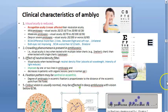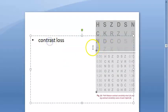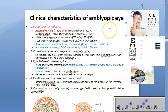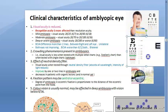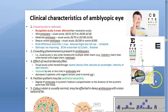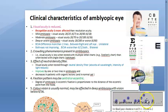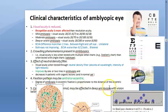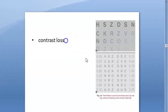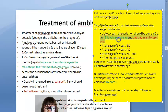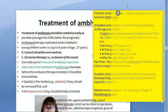Contrast sensitivity can also be reduced. To summarize the clinical characteristics: visual acuity is reduced, recognition acuity is more affected than resolution acuity, graded as mild/moderate/deep-severe, crowding phenomenon is present, neutral density filter improves vision, fixation is central or eccentric, and color vision can be affected in deep amblyopia.